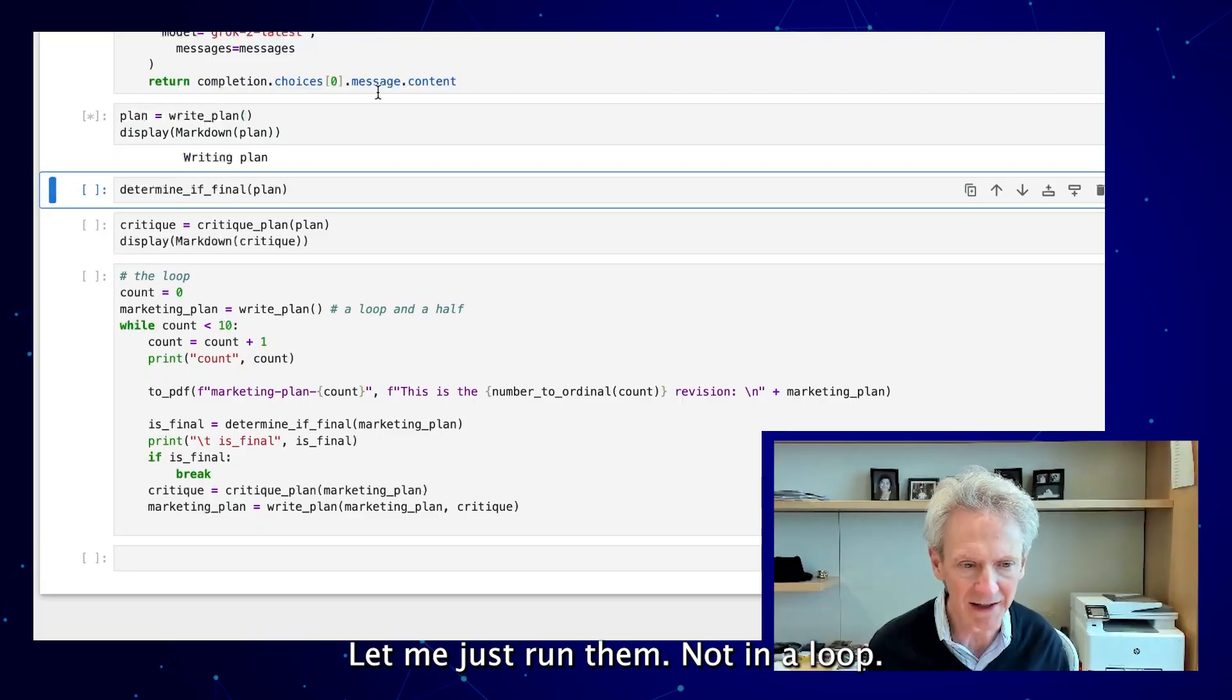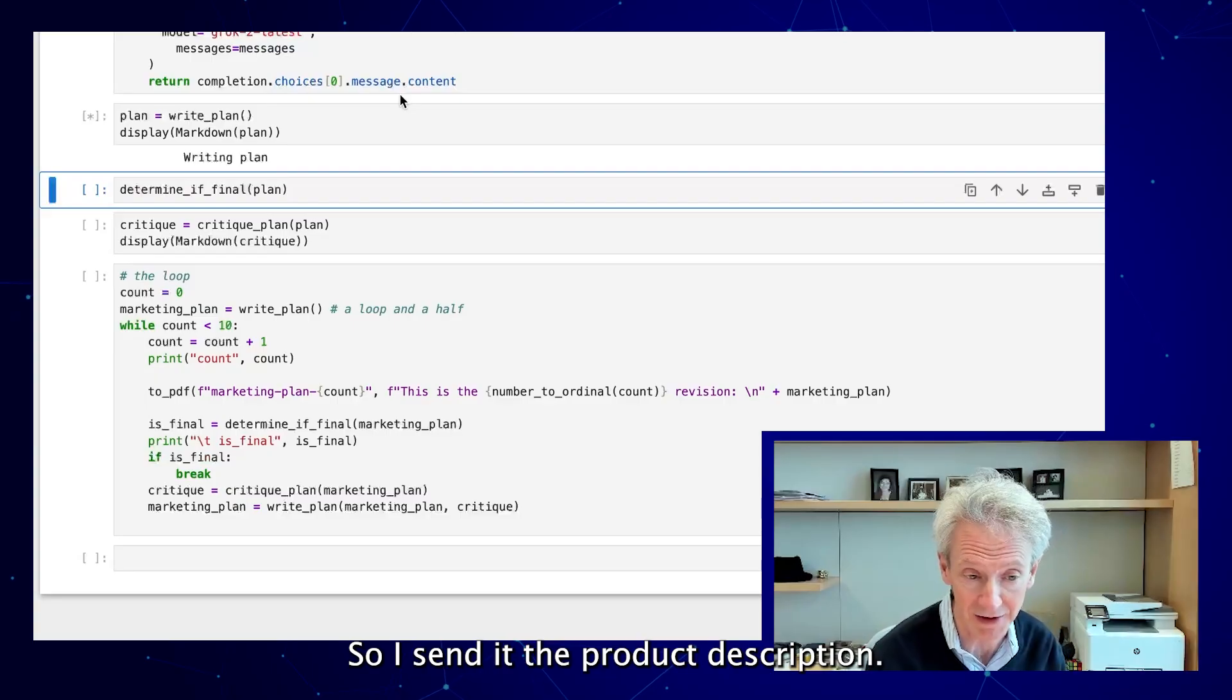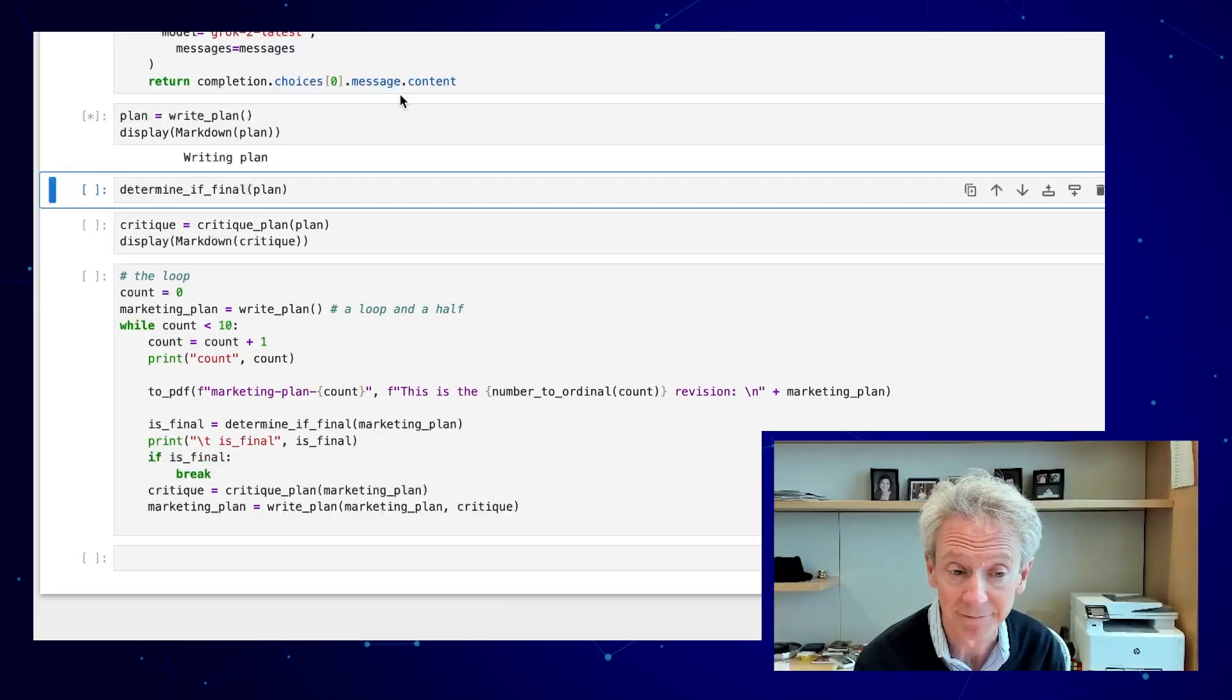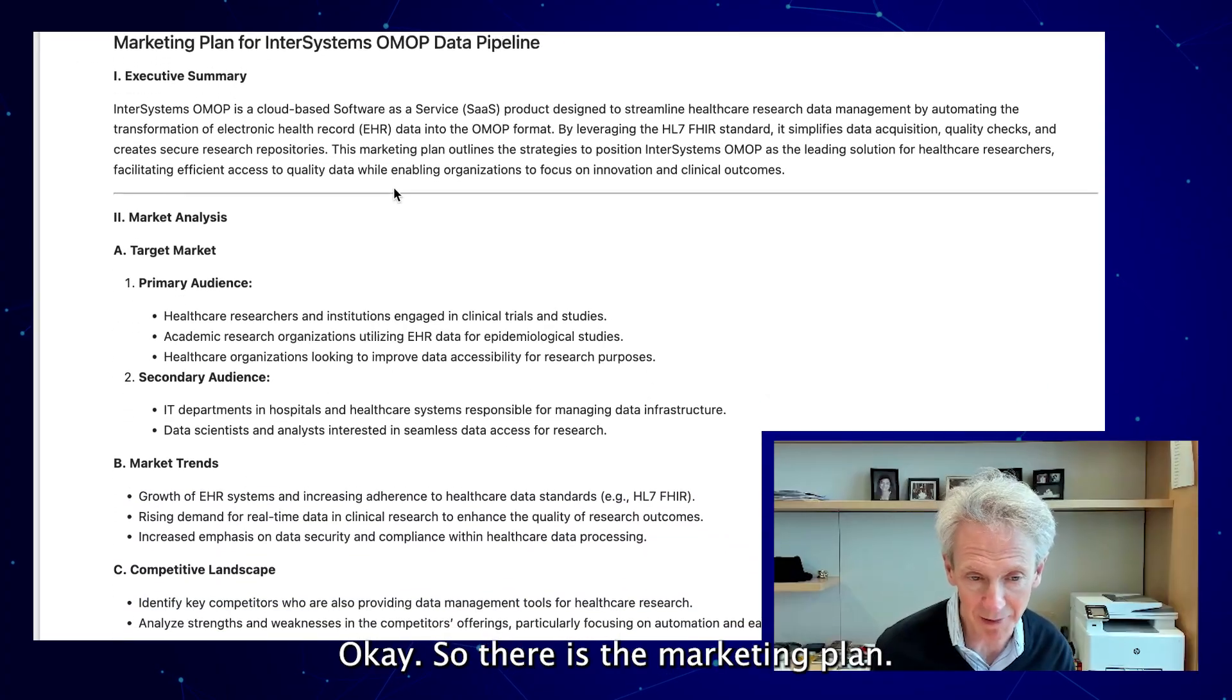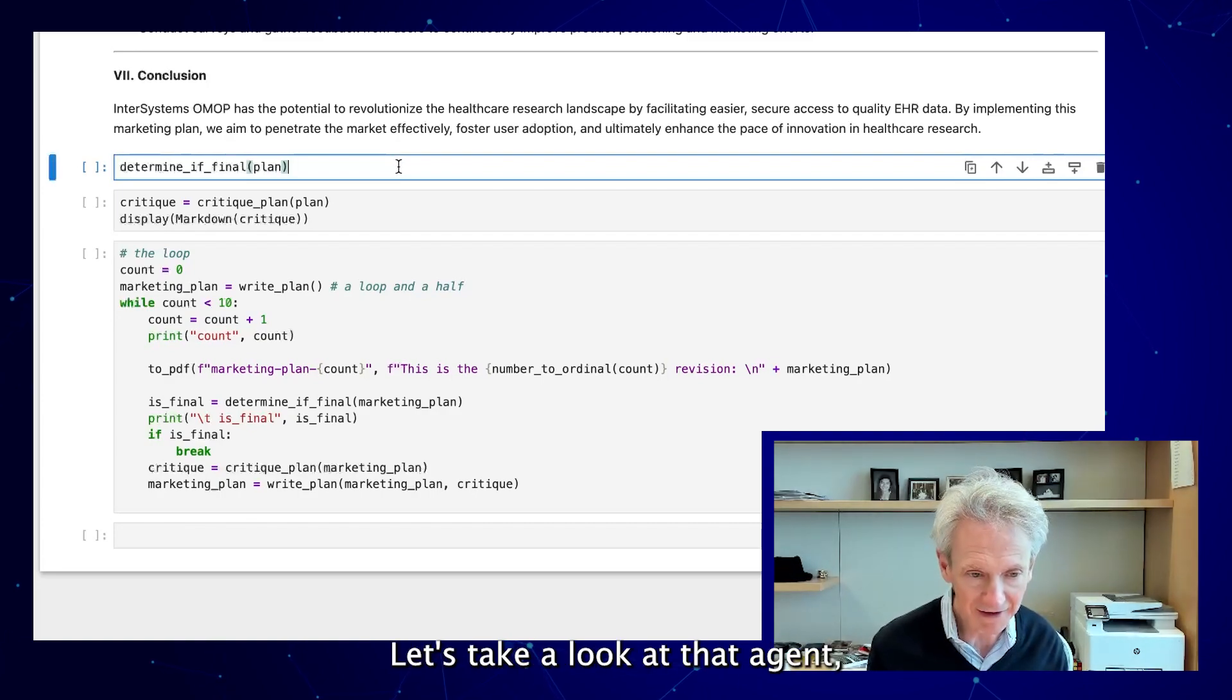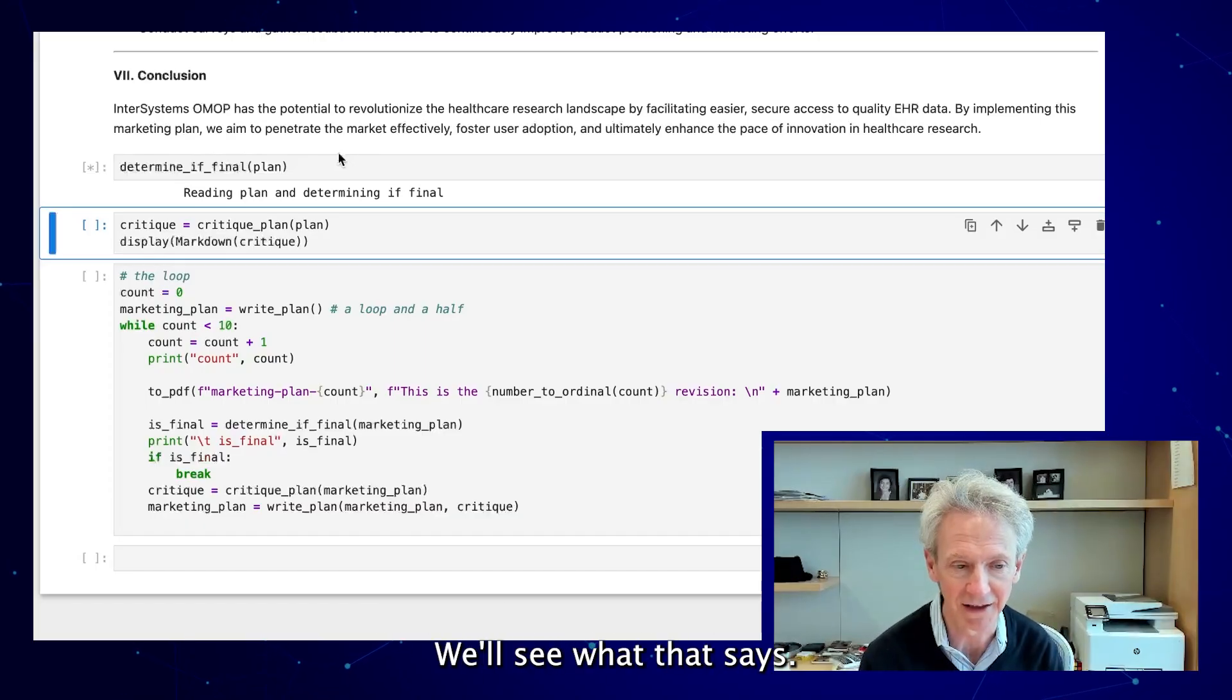Just to see what they look like when they work, let me just run them not in the loop. So this is the agent that writes the plan. So I send it the product description and then it goes off and writes a marketing plan and we'll take a quick look at it in a second. So there is the marketing plan. And I won't study it too much right now.